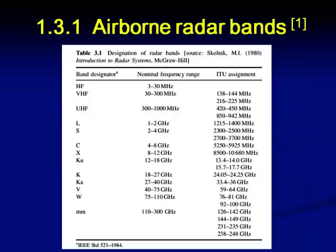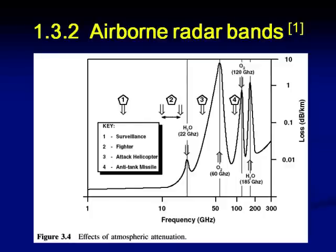These frequencies are identified taking the atmospheric attenuation of the electromagnetic waves into account. As you can see from the graph, the atmospheric attenuation is low only at certain frequencies. At these frequencies, we use radars for surveillance, for attack helicopters, anti-attack missiles, and fighters. So the frequencies are mainly decided based on the attenuation of these waves when they travel through the atmosphere.